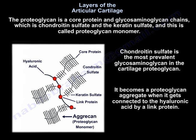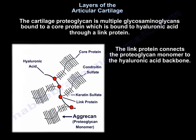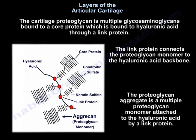It becomes a proteoglycan aggregate when it gets connected to hyaluronic acid by a link protein. The cartilage proteoglycan consists of multiple glycosaminoglycans bound to a core protein, which is bound to hyaluronic acid through a link protein. That link protein connects the proteoglycan monomer to the hyaluronic acid backbone. The proteoglycan aggregate is multiple proteoglycan monomers attached to the hyaluronic acid by a link protein.